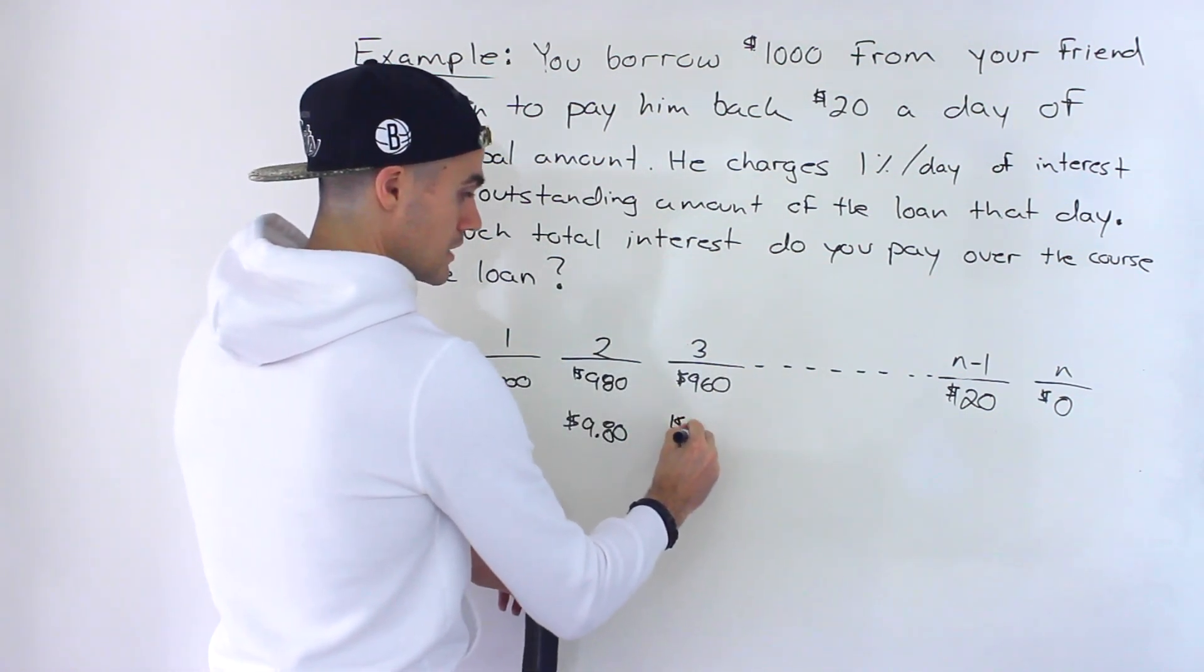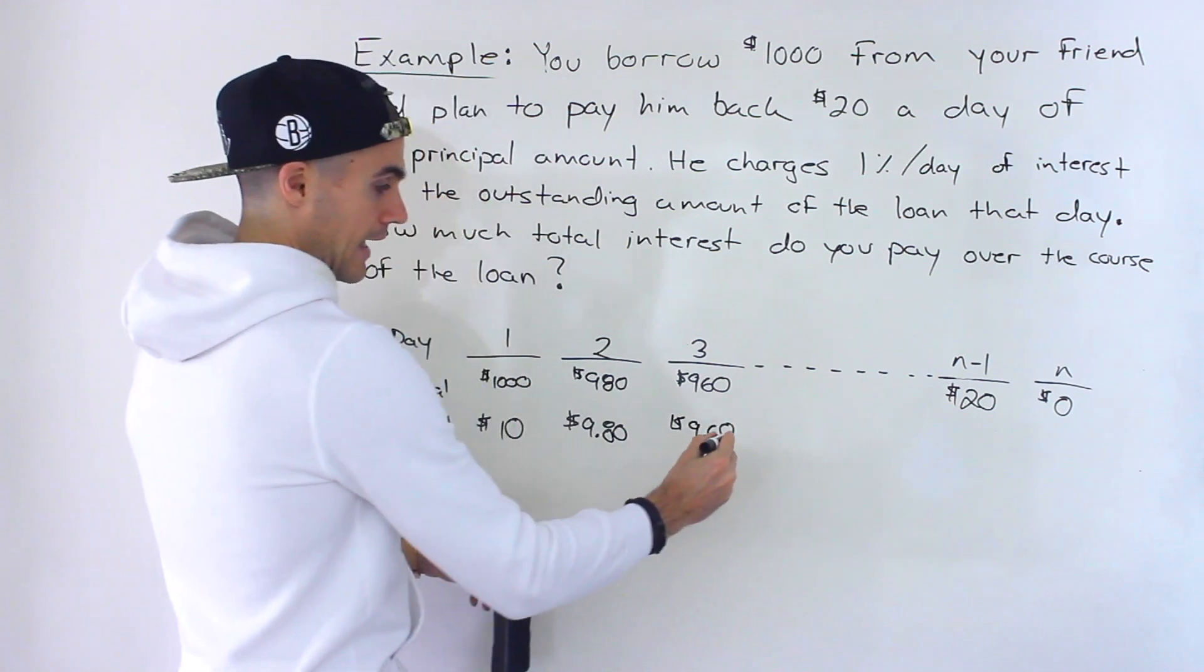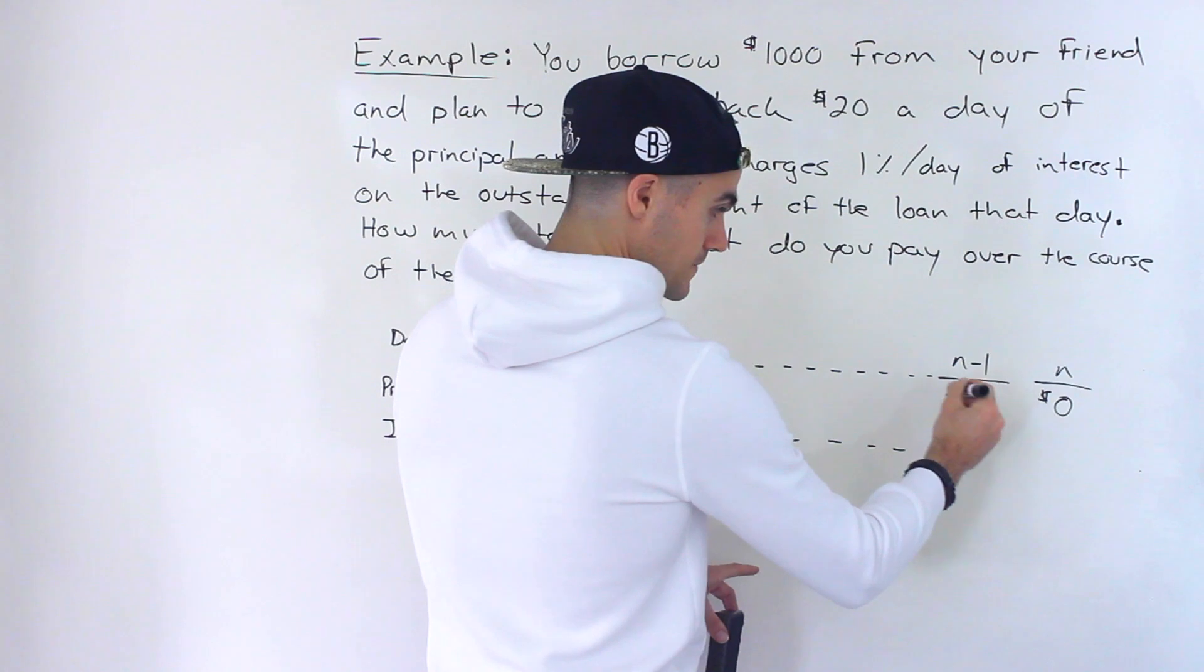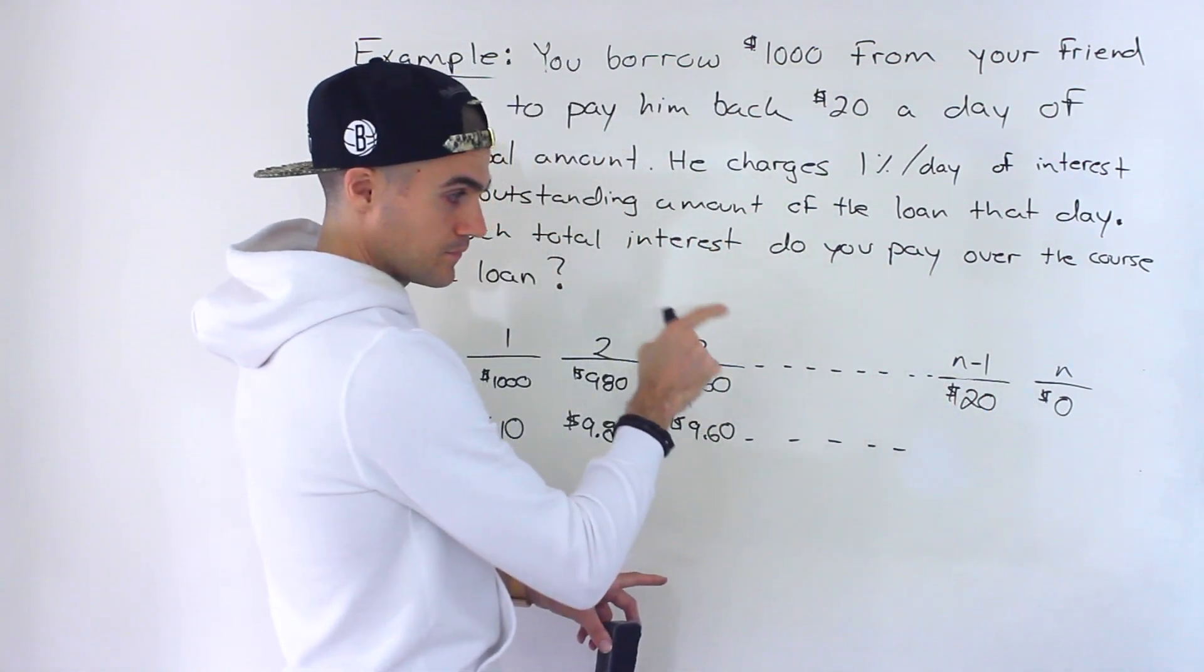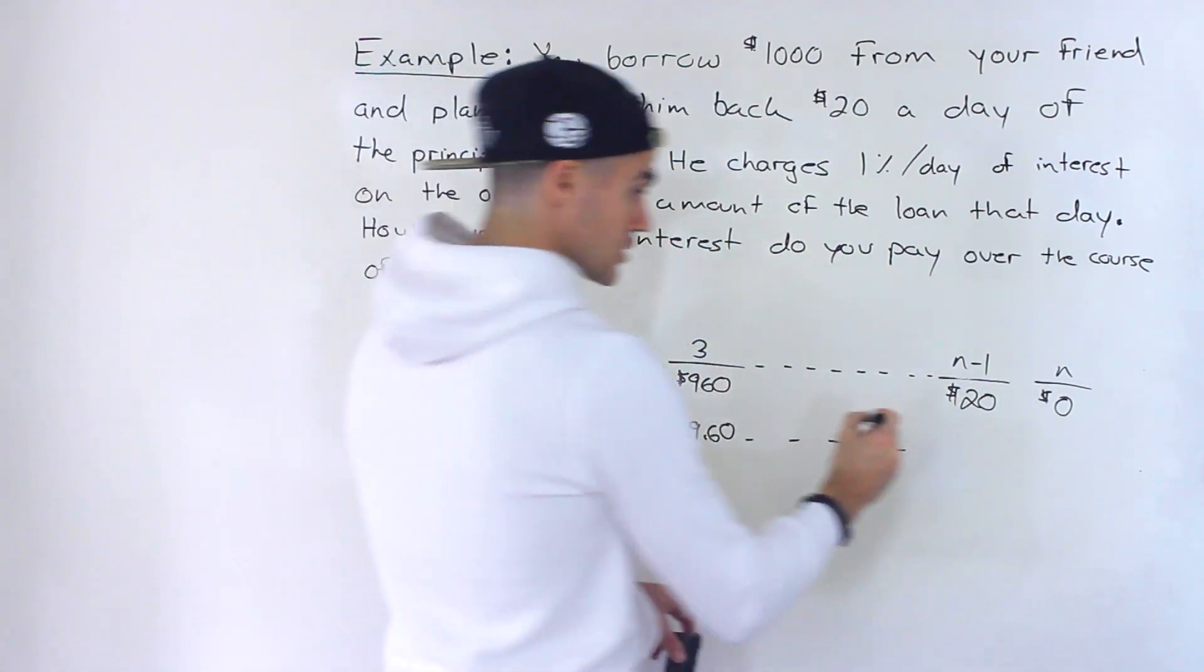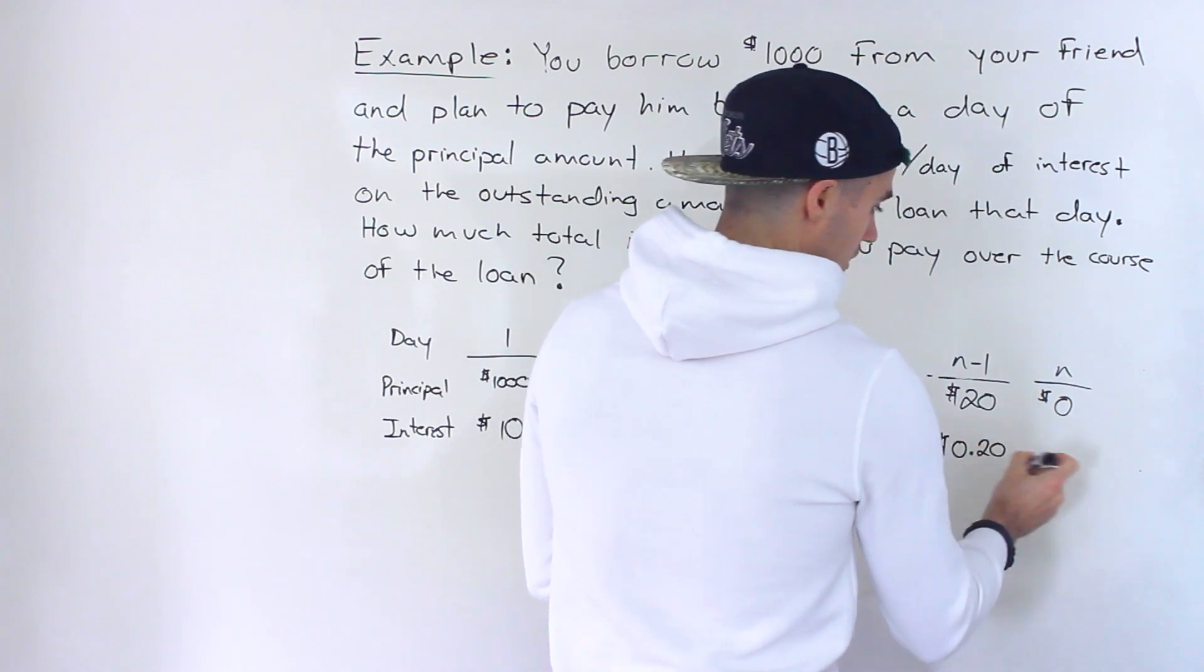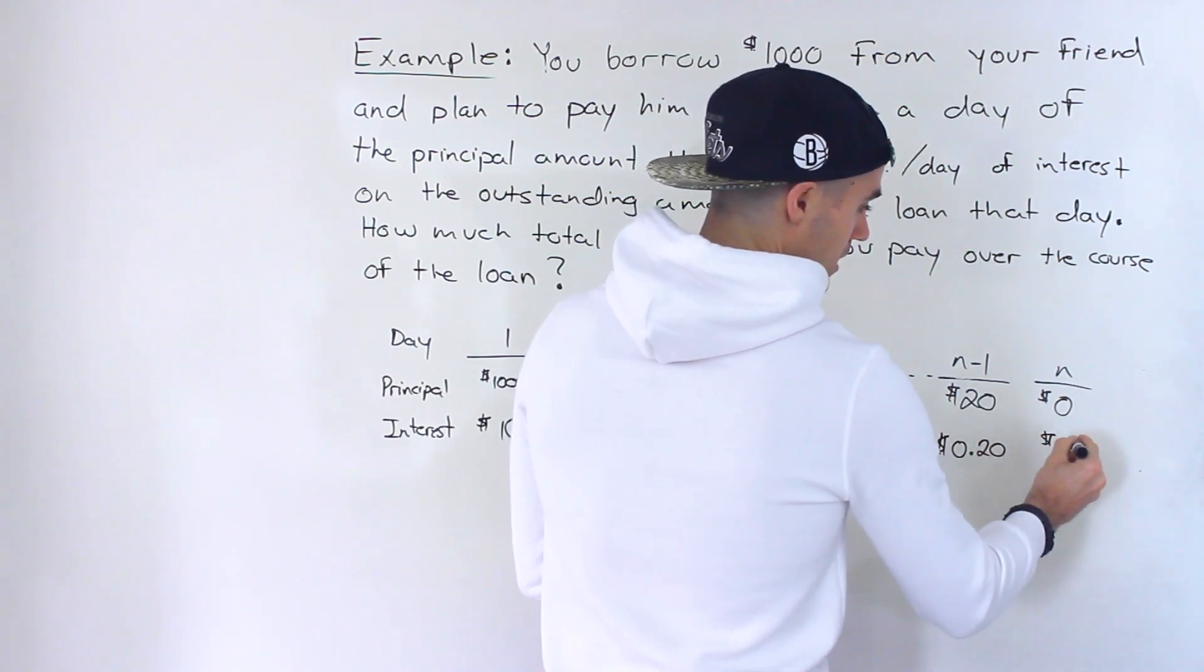So then the third day, the interest would be $9.60, et cetera, et cetera. And then over here, 1% of $20 would be 20 cents. And then finally over here, there's not going to be any interest.